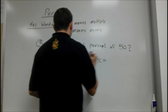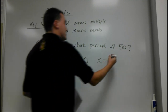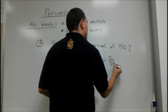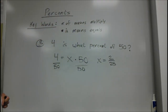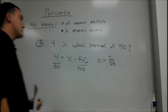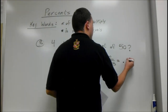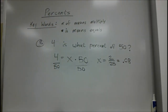We can reduce that by 2 — divided by 2, divided by 2 — giving us 2 over 25, and that happens to be .08. Okay?